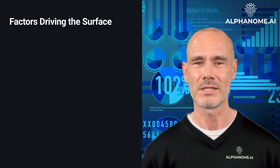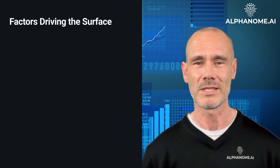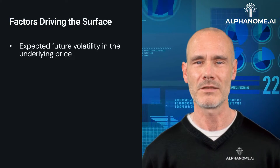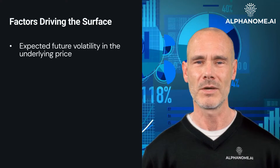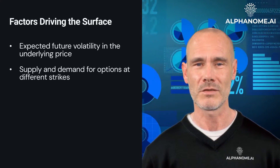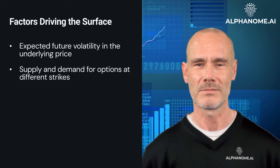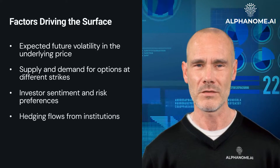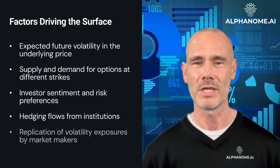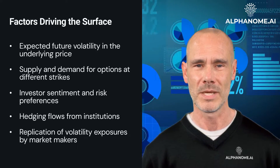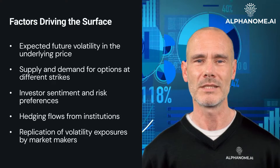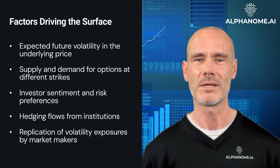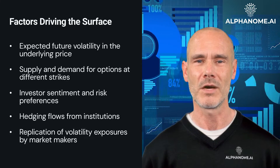The implied volatility surface is driven by a combination of factors, including expected future volatility in the underlying price, supply and demand for options at different strikes, investor sentiment and risk preferences, hedging flows from institutions, and replication of volatility exposures by market makers. Event risk, earnings announcements, and other catalysts can also dramatically impact volatility surfaces leading into and following such events.